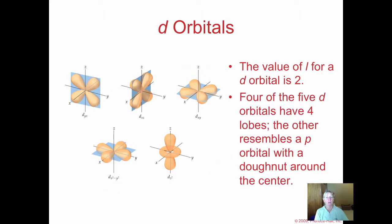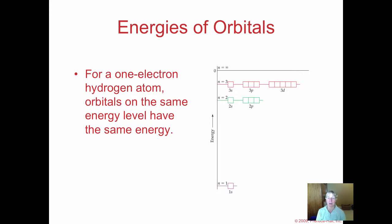The d orbitals have an l value of two. Four of them are double dumbbell types, and the fifth one is a dumbbell with a donut. If you only have a one-electron atom like hydrogen, which is why Niels Bohr's experiment worked perfectly for hydrogen but not others, orbitals on the same energy level have the same energy. Normally, at the second energy level in a multi-electron atom, the 2s would be closer to the nucleus than the 2p. There's a new term: when electrons have the same energy, we call that degenerate.